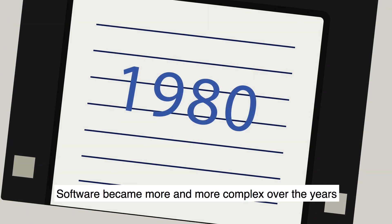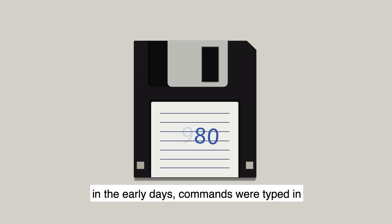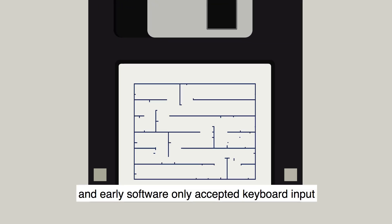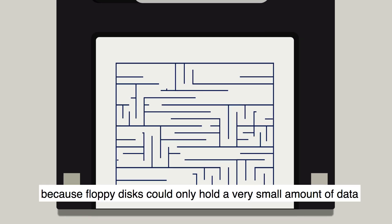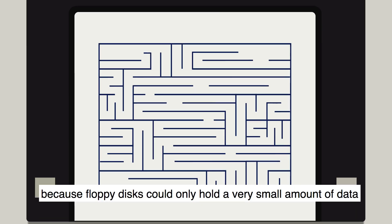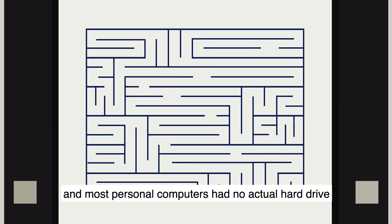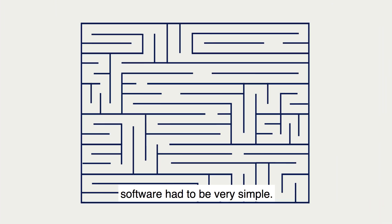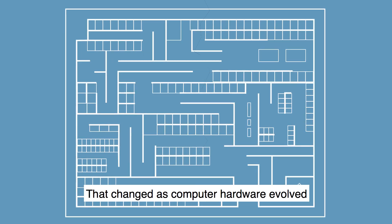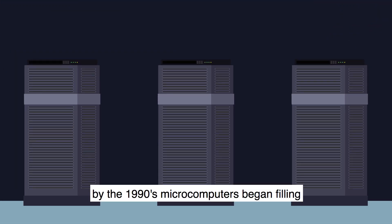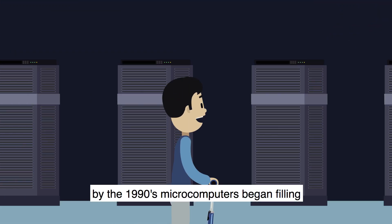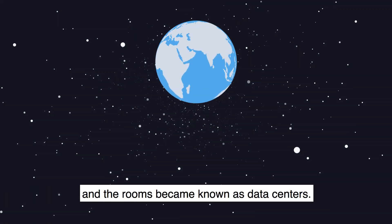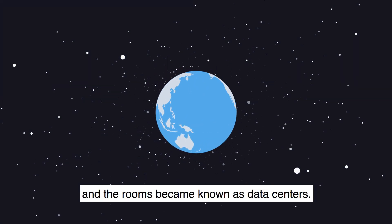Software became more and more complex over the years. In the early days, commands were typed in and early software only accepted keyboard input. Because floppy disks could only hold a very small amount of data and most personal computers had no actual hard drive, software had to be very simple. That changed as computer hardware evolved. By the 1990s, microcomputers began filling old mainframe computer rooms as servers, and the rooms became known as data centers.